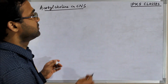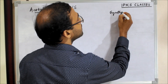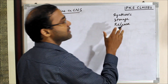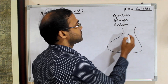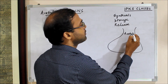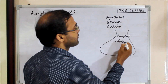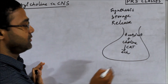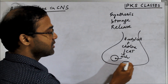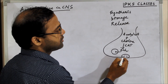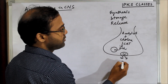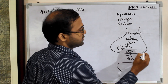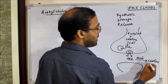The synthesis, storage, and release are all the same as that of the periphery. Acetylcholine is synthesized from acetyl-CoA plus choline by the enzyme choline acetyltransferase. It forms acetylcholine, which is then stored inside vesicles. When an impulse comes, there is exocytosis of acetylcholine, and in the synapse, acetylcholine is degraded by acetylcholinesterase enzyme to choline and acetic acid.